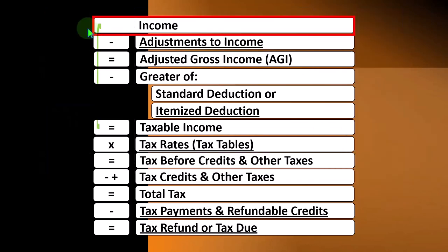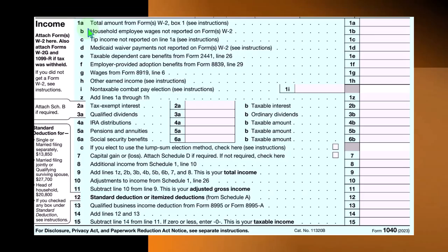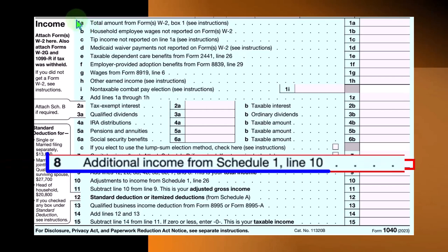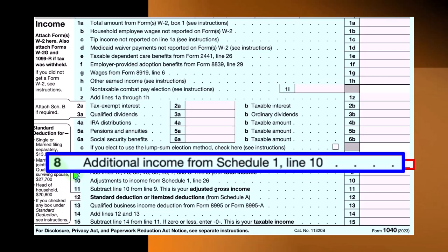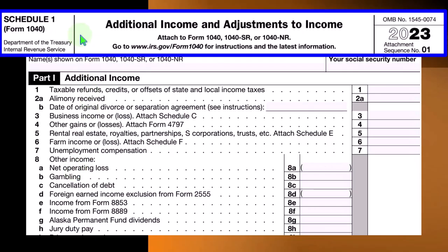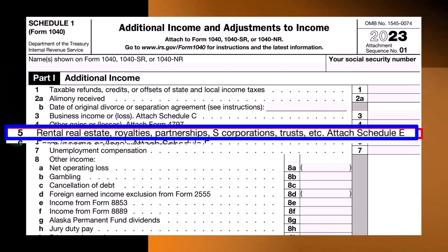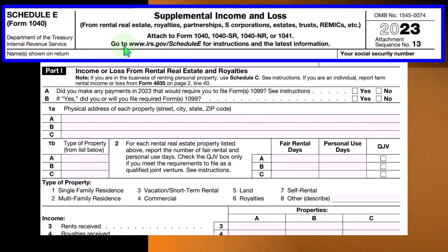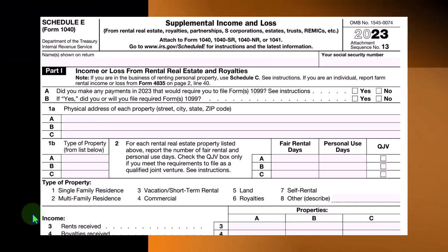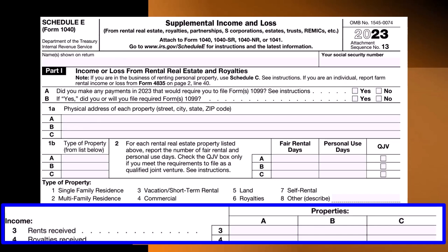This formula outlines the calculation on Form 1040. On page one, Schedule E ultimately rolls into line eight, additional income from Schedule 1. On Schedule 1 — additional income and adjustments — Schedule E rolls into line five, rental real estate. Attach Schedule E, which is the supplemental income and loss from rental real estate, royalties, and so forth, basically having an income statement format per property.